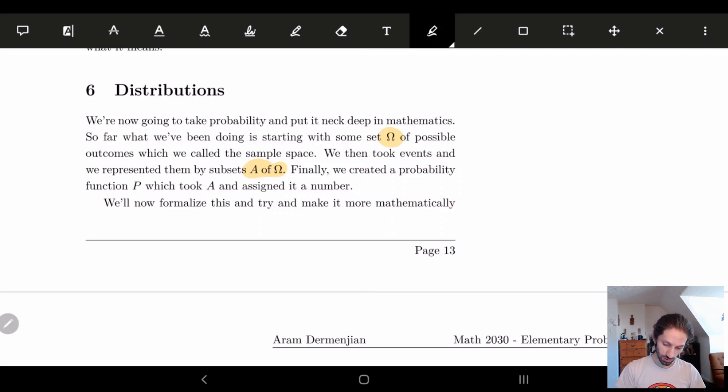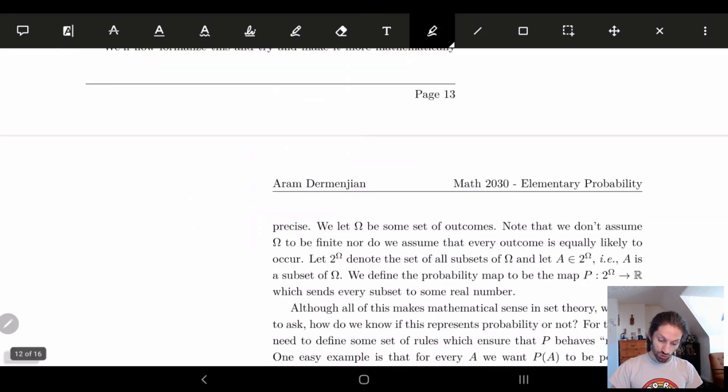And so what we're going to do is we're going to look at this probability function P and see when, if I have some arbitrary function, when is this a probability function? When does it give us exactly what we want? When does it give us probability in essence?